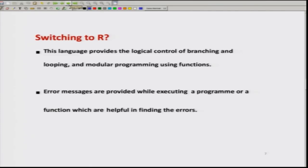Just like any other language, R also has all sorts of structure. It can provide logical control of branching, looping, as well as modular programming using the concept of functions. Any software language has several options — we can do mathematical manipulations, logical manipulations, and sometimes we have to repeat the program, for which we use the concept of a loop. Whenever dealing with a huge program, the entire program is divided into several smaller parts, and every developer develops a smaller part and they are combined together — that is called modular programming. All these things are possible in R.